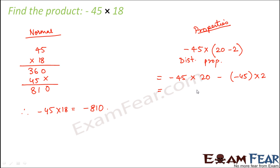So 45 × 20 is 900. Otherwise 45 × 2 is 90. So this is -900 minus -90.